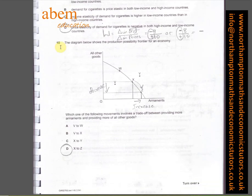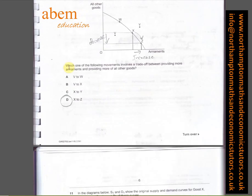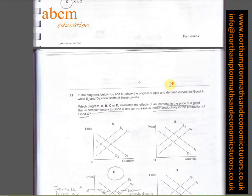In question number ten, the diagram shows the PPF for an economy. If the economy is moving from point X to point Z, then there is a decrease for all other goods and an increase for armaments. That's called the opportunity cost, giving up all other goods to manufacture more armaments. From the diagram, D is the answer.